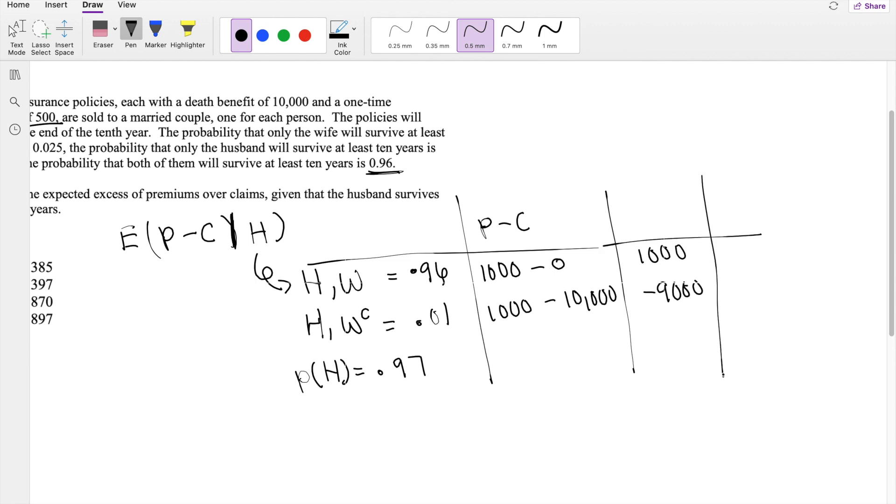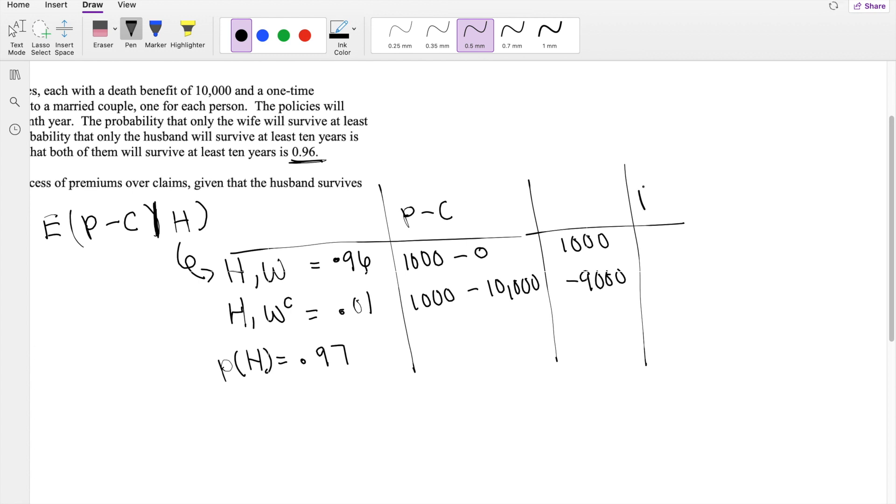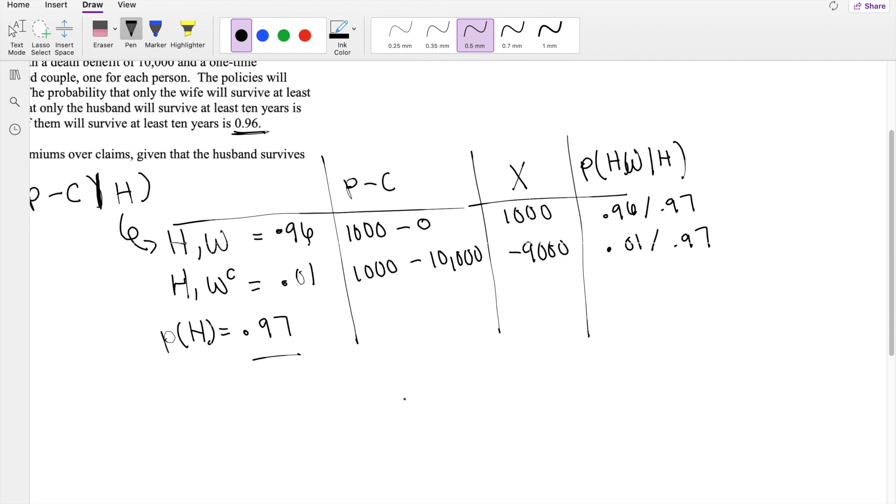And what are those conditional probabilities? The conditional probability of husband and wife surviving, given the husband survives, is going to be equal to 0.96 divided by the probability that husband survives, which is 0.97. And likewise, this is going to be equal to 0.01 divided by 0.97.